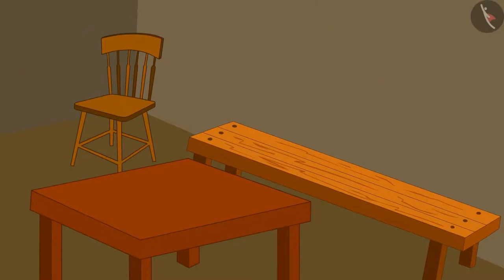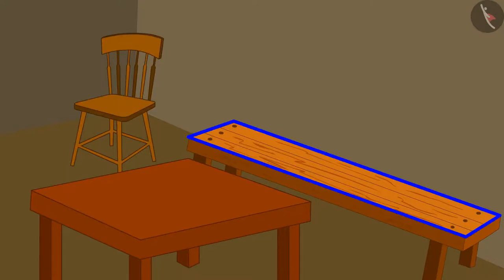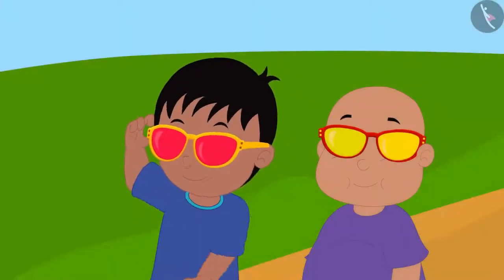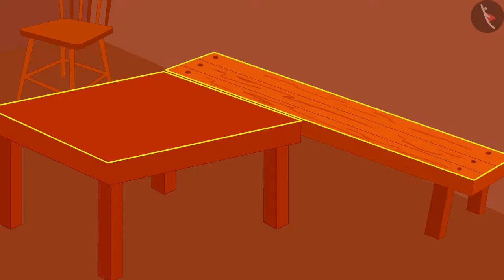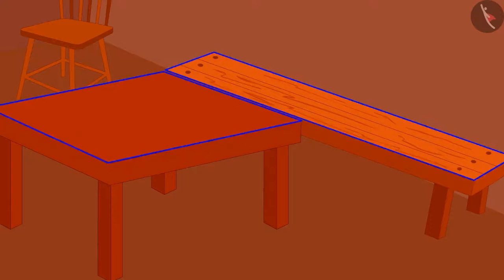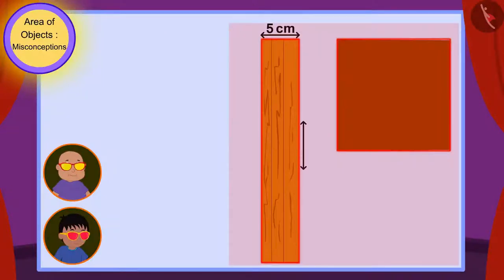Uncle's shop has a square-shaped table and a rectangle-shaped table. Raju first looked at the top surfaces of both tables with his glasses and he could see the measure of the sides of both the tables like this.